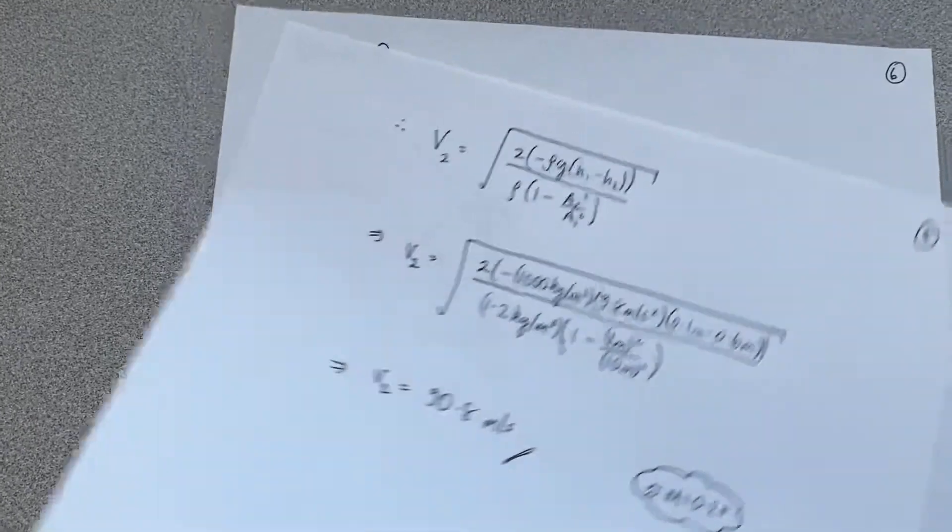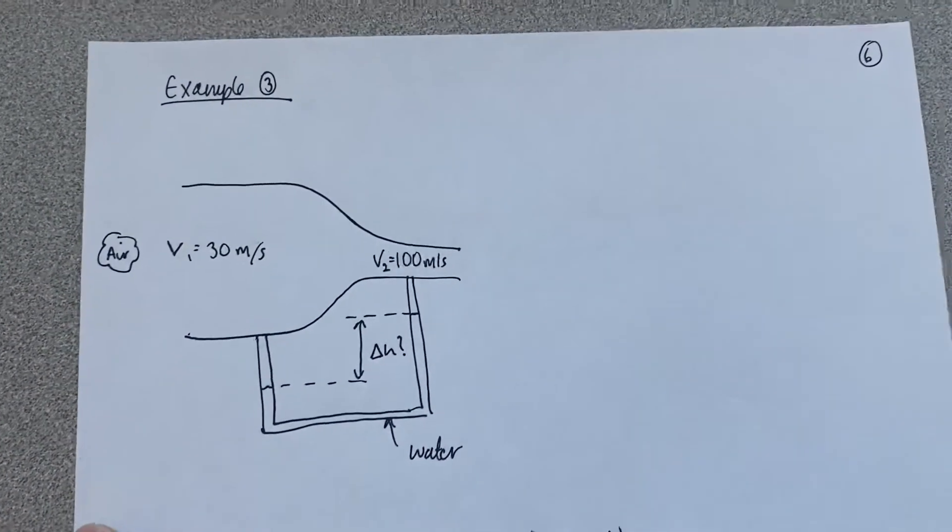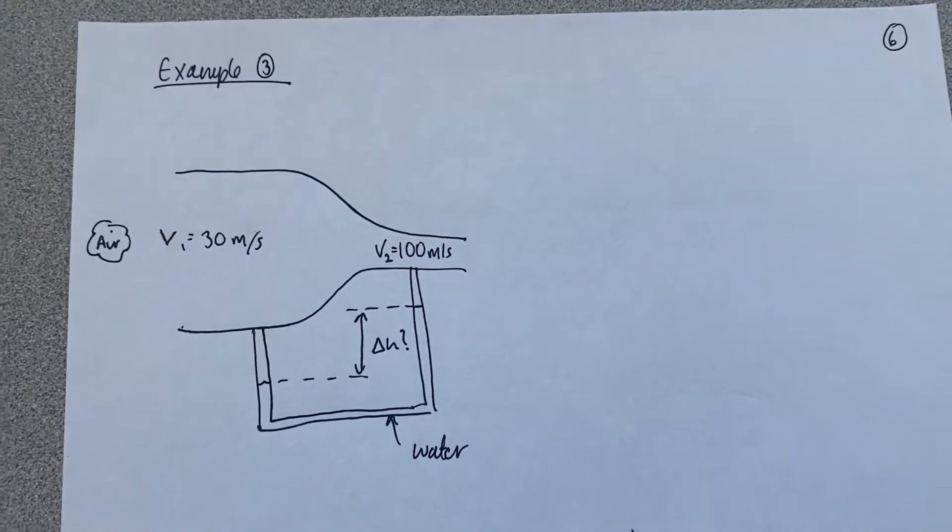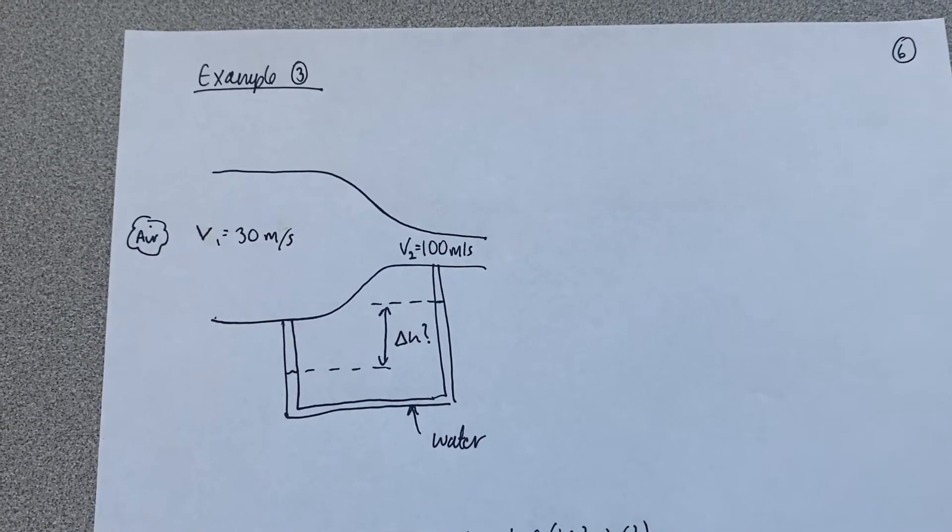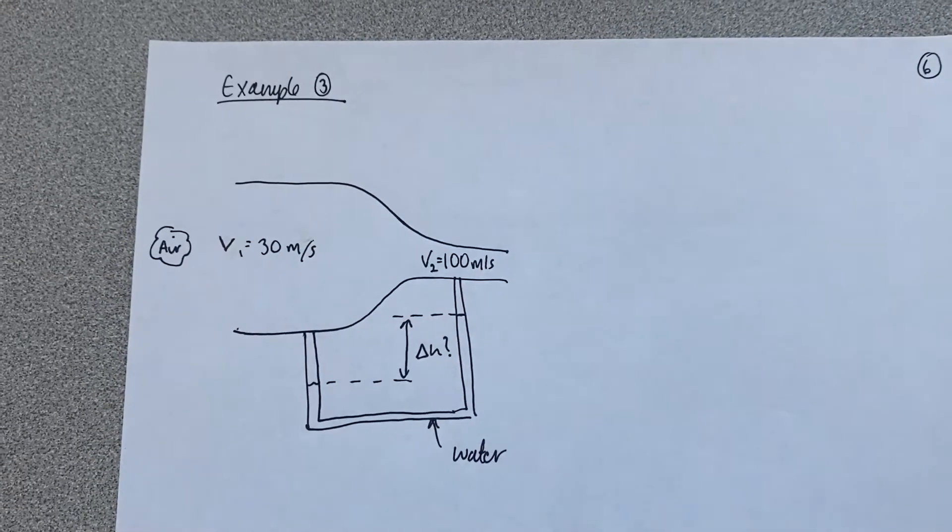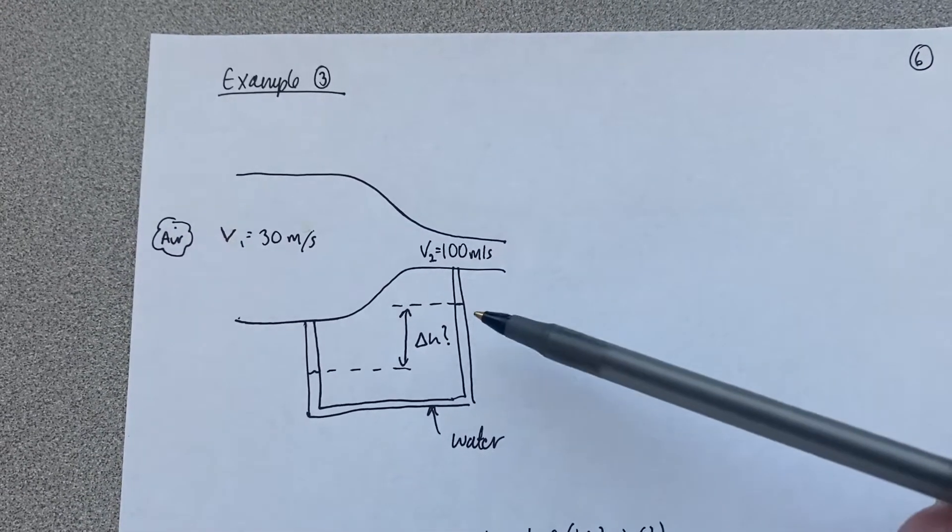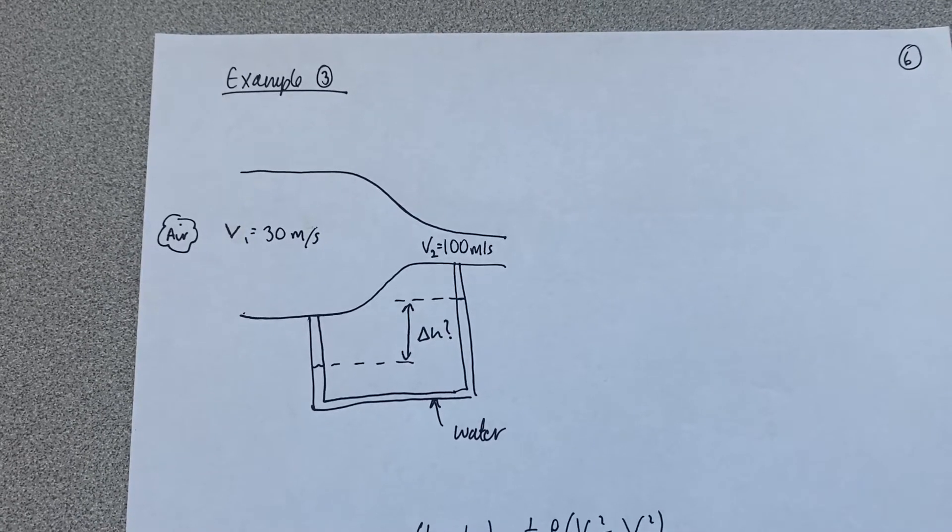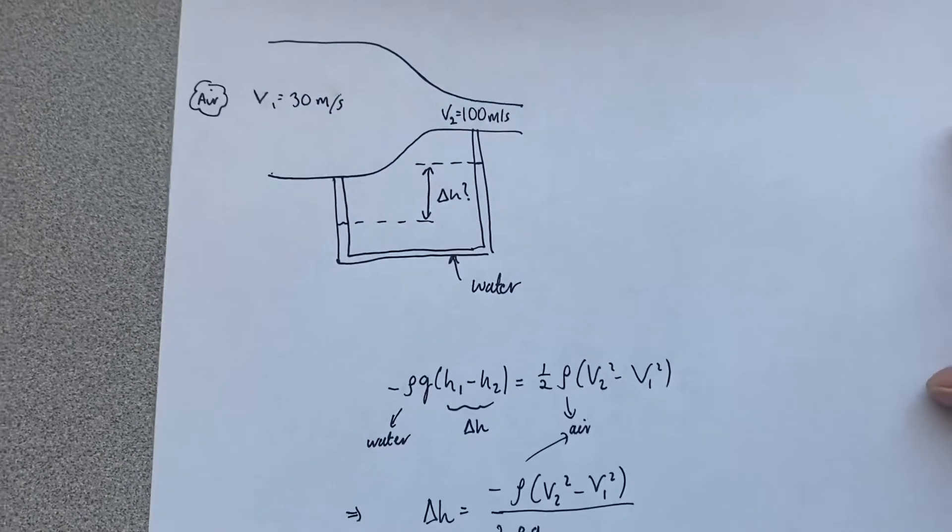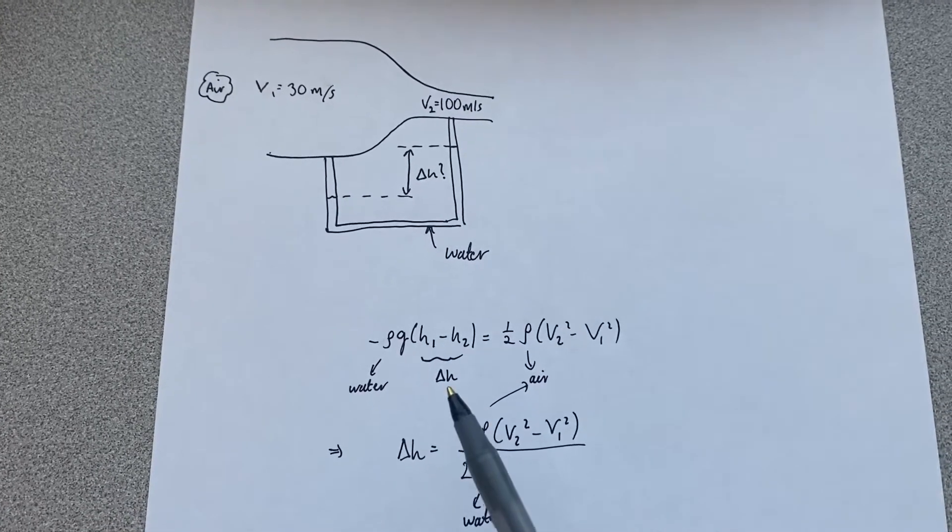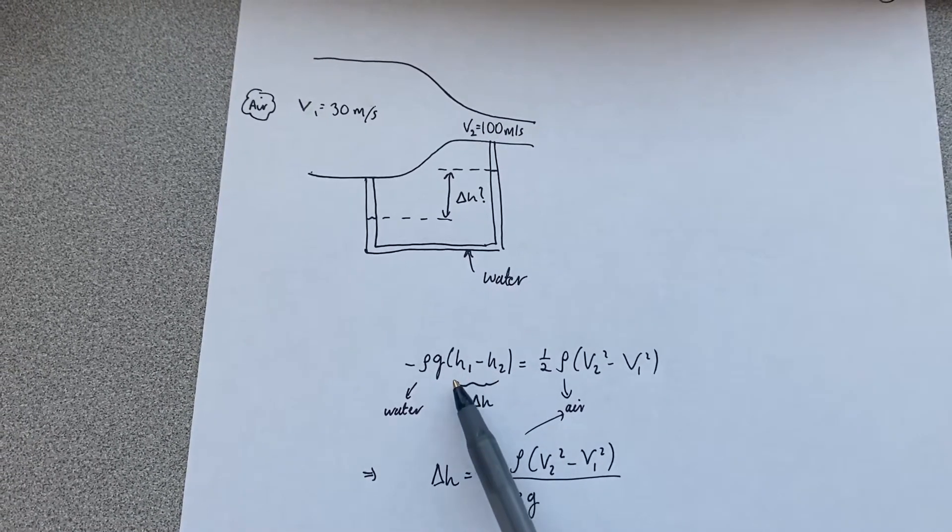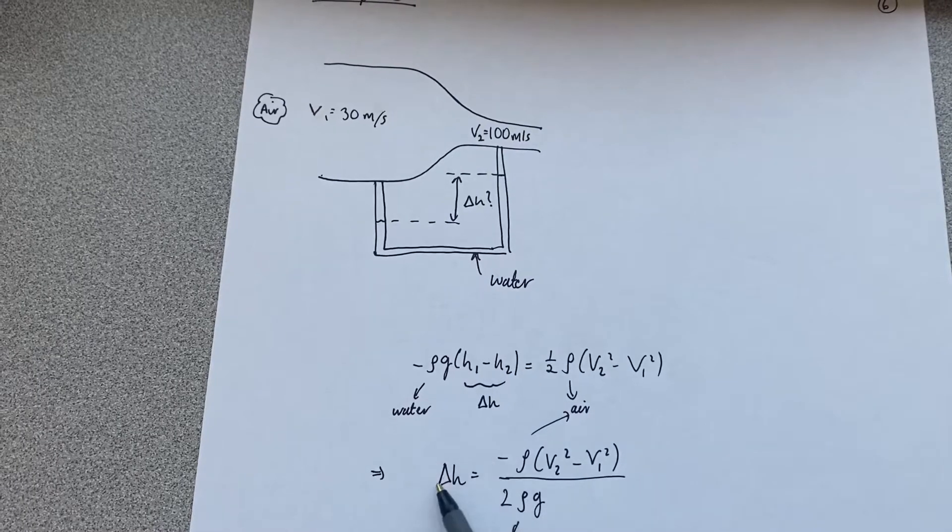So then finally, let's have a look at example number three. What happens if I would like to calculate the difference in water level based on the speeds, right? So this time I'm looking for a delta h. So again, this time I use Bernoulli's equation, rearrange it for delta h, right. So remember, h1 minus h2, delta h.